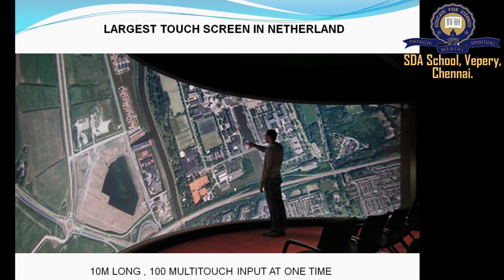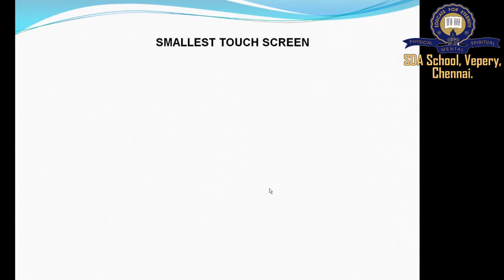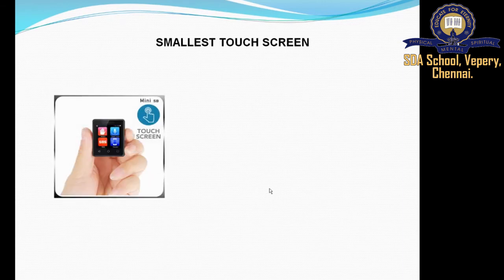The largest touch screen can be accessed by 100 people at a single time and is available in the Netherlab. The smallest touch screens are found in wrist watches and MP3 players, and also in smartphones which come in a smaller size.